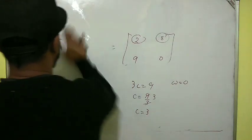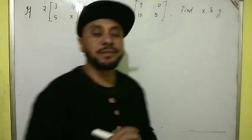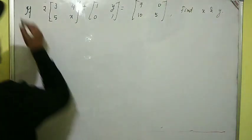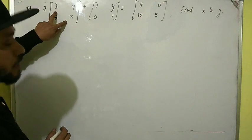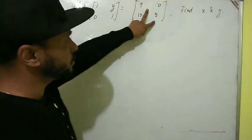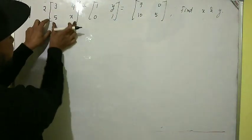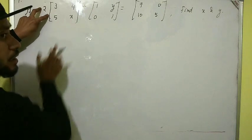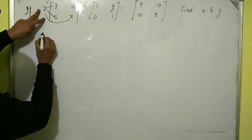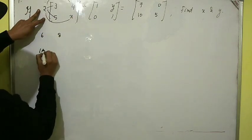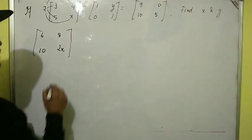Let's try some examples. Example 1: it is given that 2 times a matrix plus another matrix equals a result matrix — find the value of x and y. We are multiplying by 2, so this is scalar multiplication. Multiply all elements by 2: 2 threes are 6, 4 twos are 8, 5 twos are 10. When writing elements, please leave a gap.